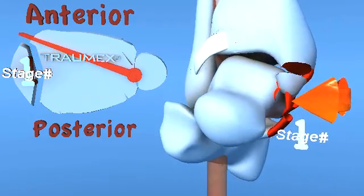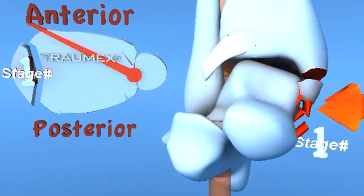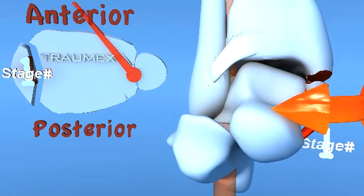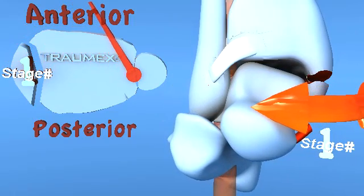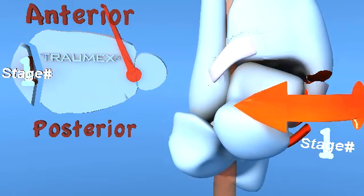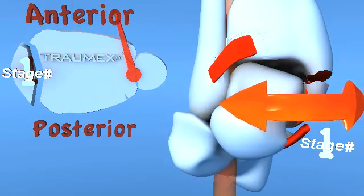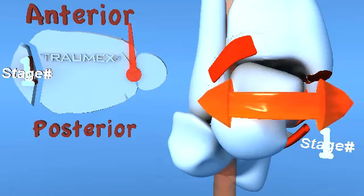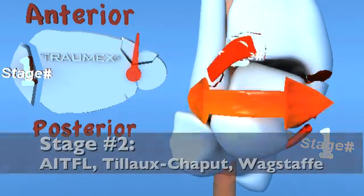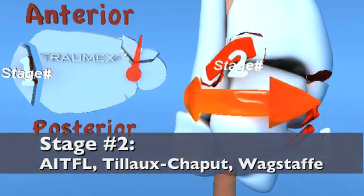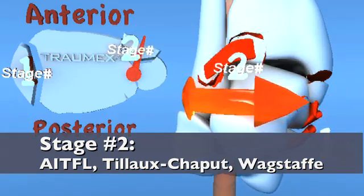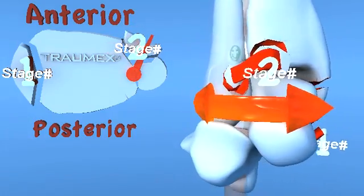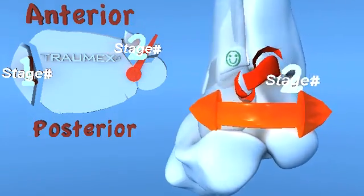As the injury progresses forward into stage 2, the talus rotates further laterally, putting tension on the anterior inferior tibial fibular ligament, resulting in either a rupture of this ligament or an avulsion fracture off the anterior portion of the fibula or tibia.